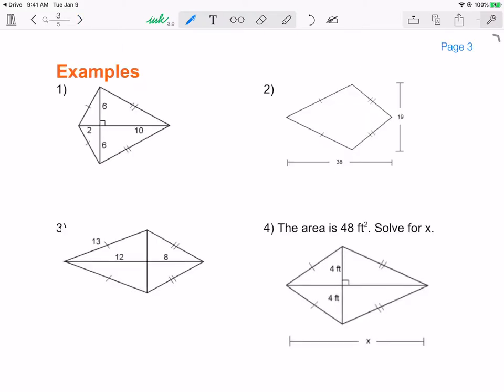So let's take a look at a few kite problems. In these kite problems, I'm doing exactly the same thing. I need the length of my diagonals. Well, 2 plus 10 gives me 12. And 6 and 6 give me 12 as well. So then my area is 12 units times 12 units divided by 2, which gives me 72 units squared.